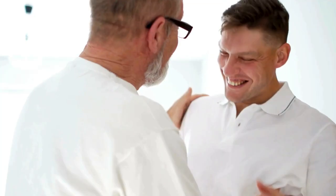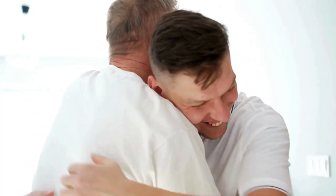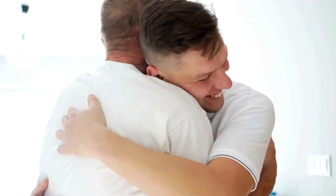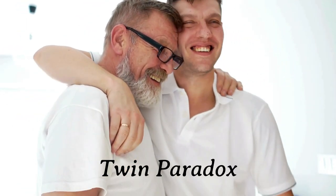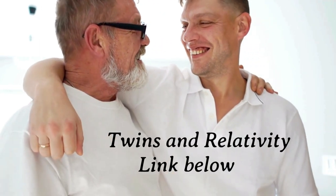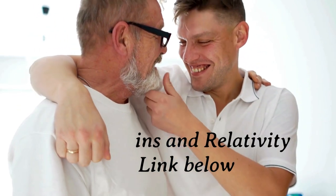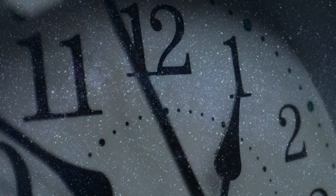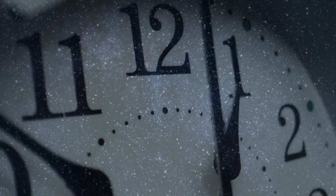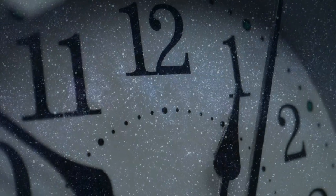Upon returning to Earth, the traveling twin would be noticeably younger than the one who remained on our planet. This intriguing scenario is commonly known as the twins paradox. You can watch our video titled Twins and Relativity for further detail. It's crucial to understand that the twin paradox only appears paradoxical when we hold on to the idea of absolute time.